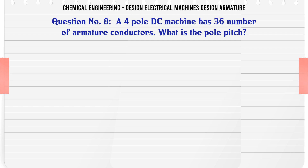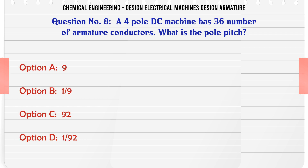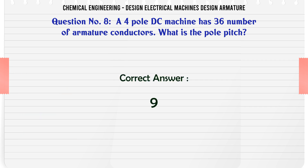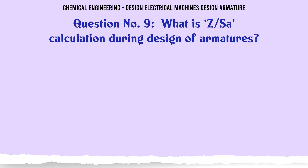A 4-pole DC machine has 36 armature conductors. What is the pole pitch? Options: a) 9, b) 1/9, c) 9/2, d) 1/92. The correct answer is 9.